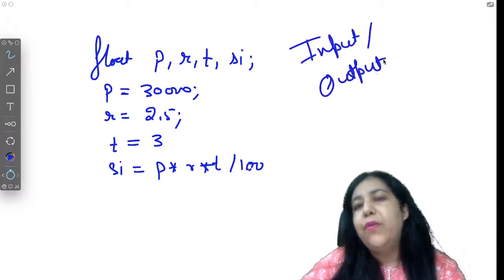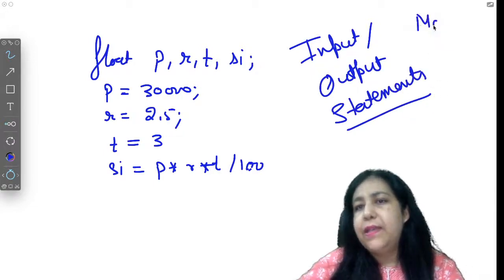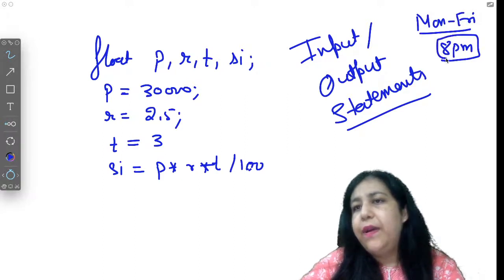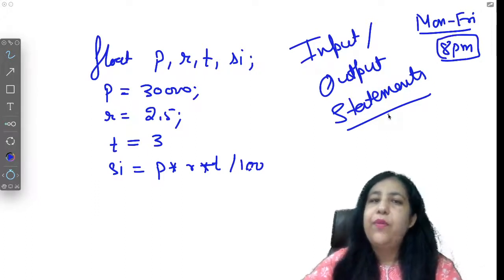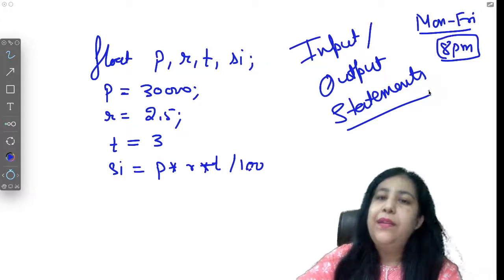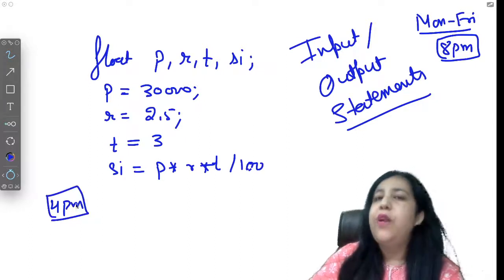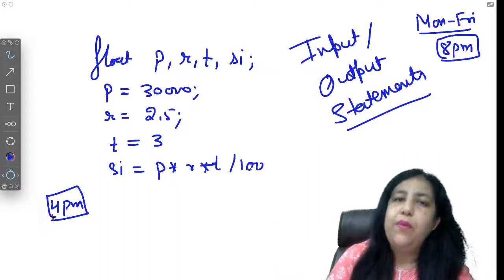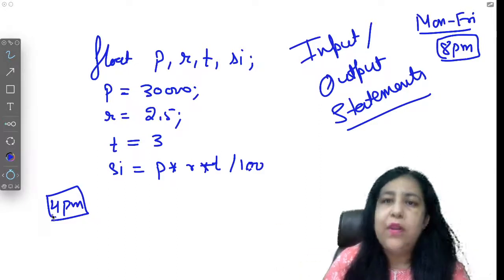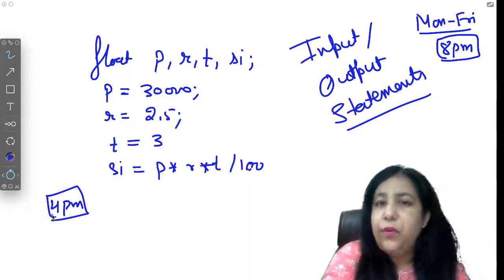And every time principle, rate, time is not the same. For that we need to take the value from the user. We need to ask the user for the principal amount, the rate, and the time, and accordingly calculate the result. So we need input output statements that I will provide you in the next video. Videos will be there Monday to Friday. Monday to Friday, 8am, these videos will come to the channel. So every Monday to Friday you are going to get videos for C programming language.